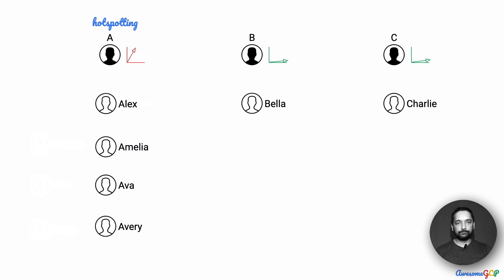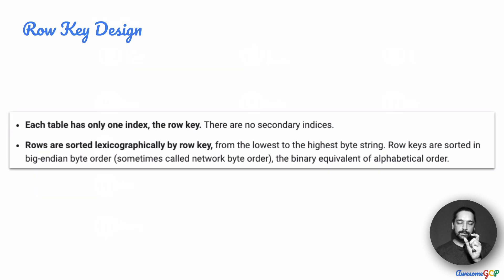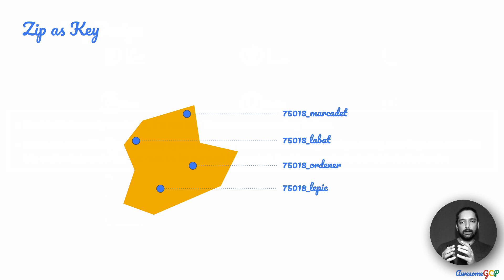This is what is called hotspotting. A key design could improve the spread of usage across A, B, and C and avoid hotspotting. Every table in Bigtable has only one index and that is the row key — there are no secondary indices. The row key itself is sorted lexicographically. So if our design does not accommodate this fact, we could have hotspotting.